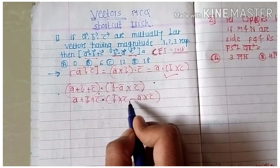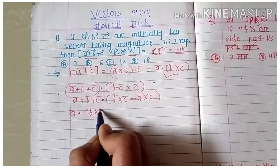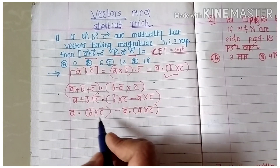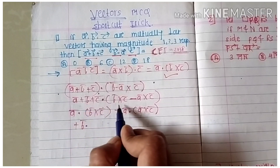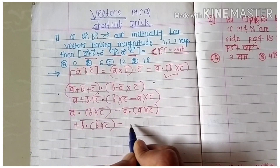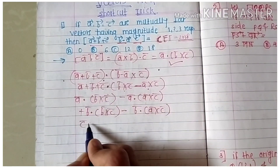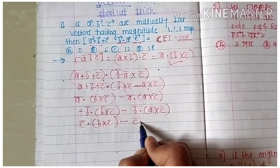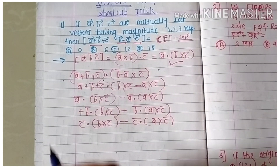The dot distributes over the cross product, giving us: ā·(b̄ × c̄) − ā·(ā × c̄), then plus b̄·(b̄ × c̄) minus b̄·(ā × c̄), and then c̄·(b̄ × c̄) minus c̄·(ā × c̄).